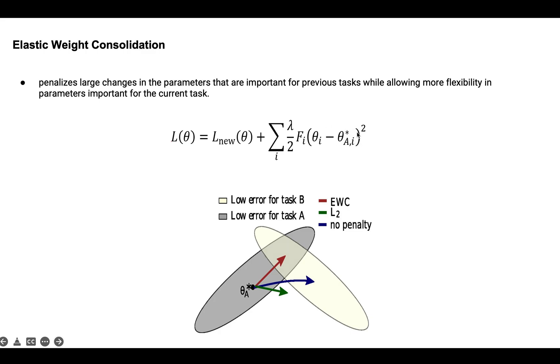The penalty term is like adding a spring between the model and the lowest point on plane A. The spring pulls the model back to plane A while the loss function pushes the model down to plane B. And the strength of the spring or the penalty term depends on how important the weights are for the old task, which is measured by the Fisher information metric. Fisher information metric can be estimated using the previous task, and it's shown here by F.